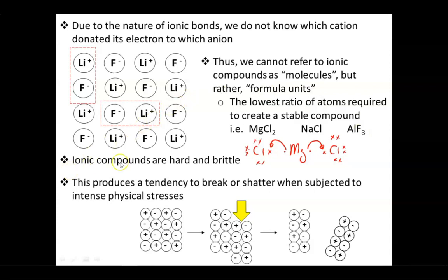Finally, ionic compounds tend to be hard and brittle. This crystal lattice structure of alternating opposite charges, positive, negative, positive, negative, holds those ions tightly in place. So you're going to need a lot of force to get these guys to move. That's why the ionic crystals tend to be very hard.